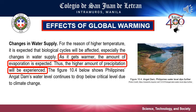Third, changes in water supply. By changing air temperatures and circulation patterns, global warming also changes where precipitation falls. Water in its various forms is always on the move in a complex process known as the water cycle. Global warming is already having a measurable effect on this cycle, altering the amount, distribution, timing, and the quality of available water. As it gets warmer, the amount of evaporation is expected to increase, thus a higher amount of precipitation is expected. As you can see on the figure, the Angat Dam, Philippines' water level drops further.